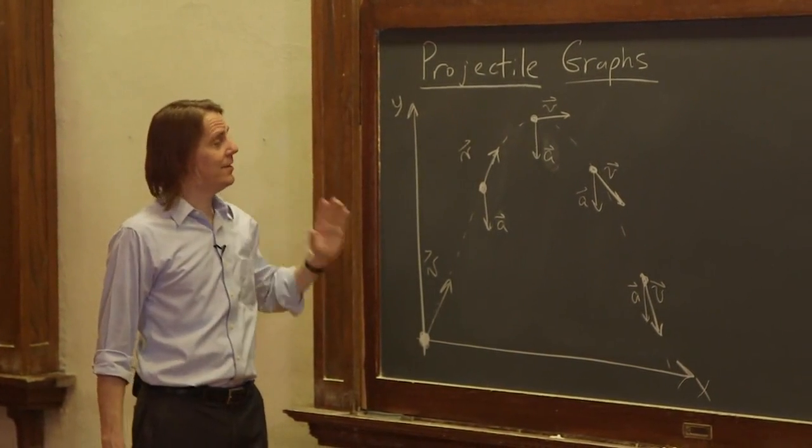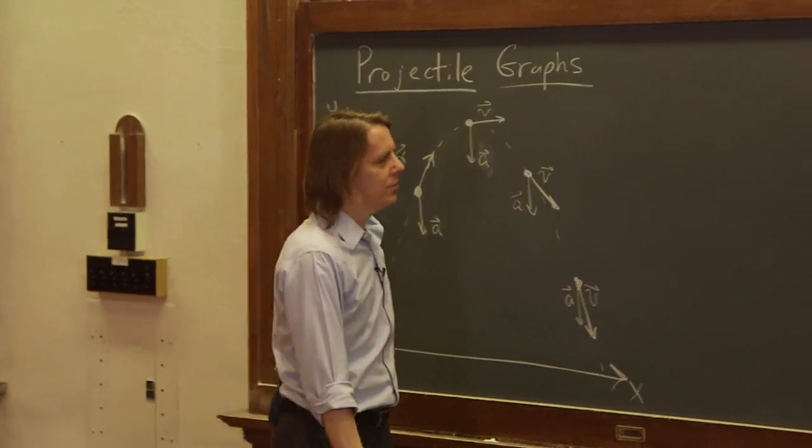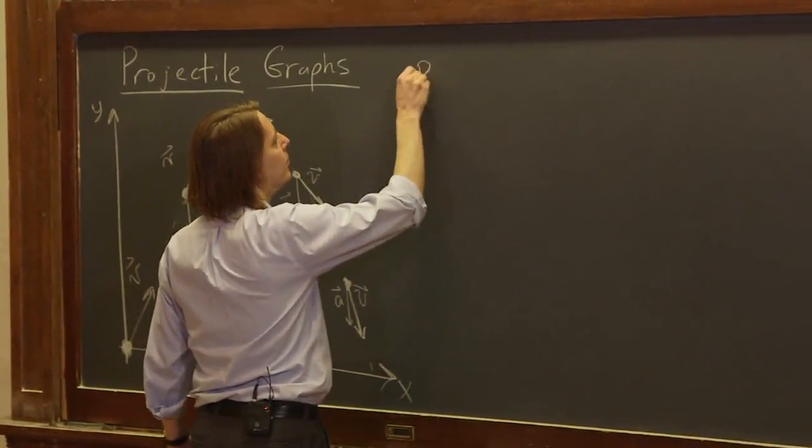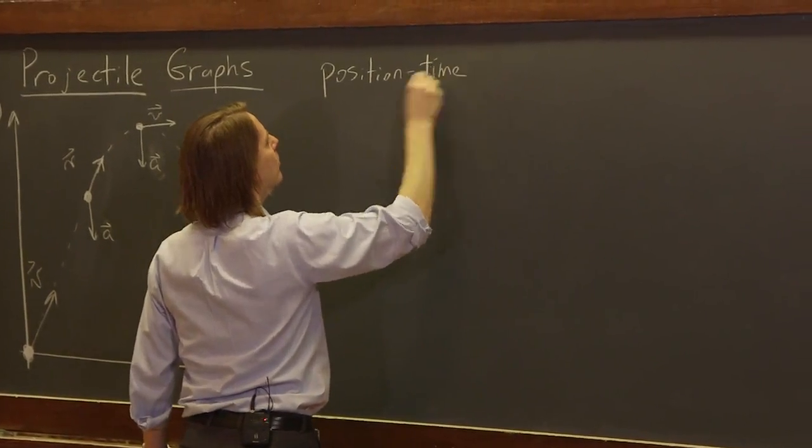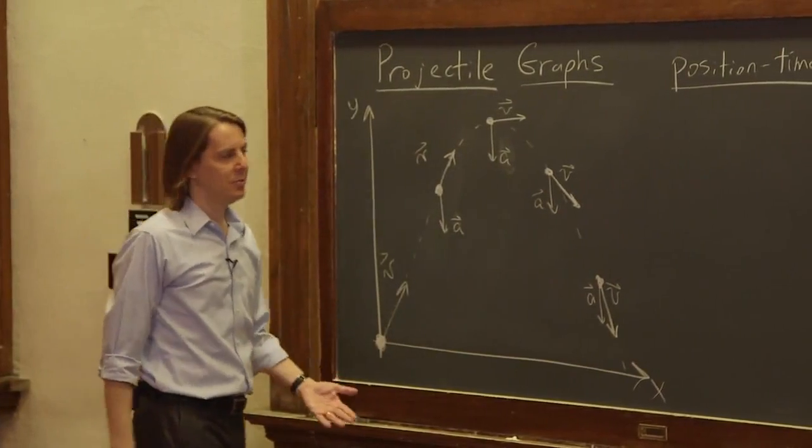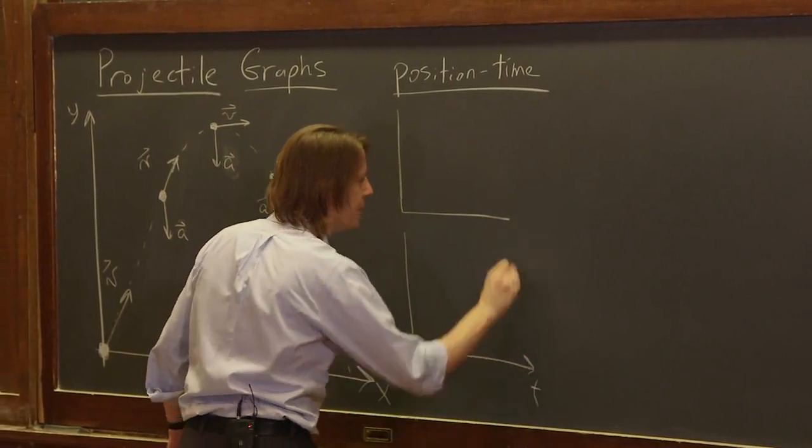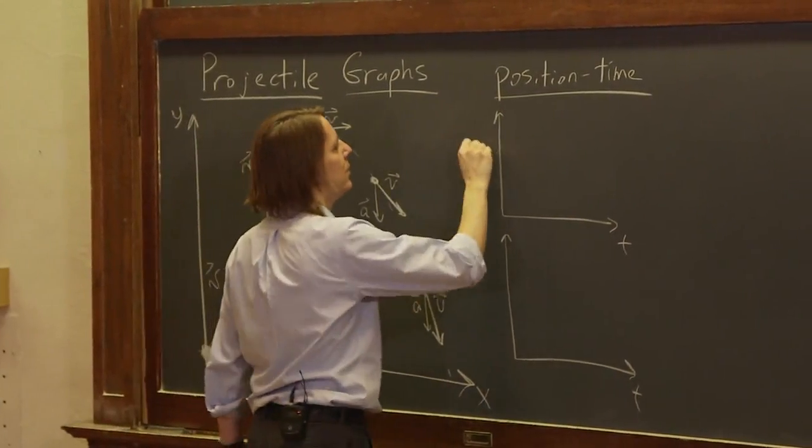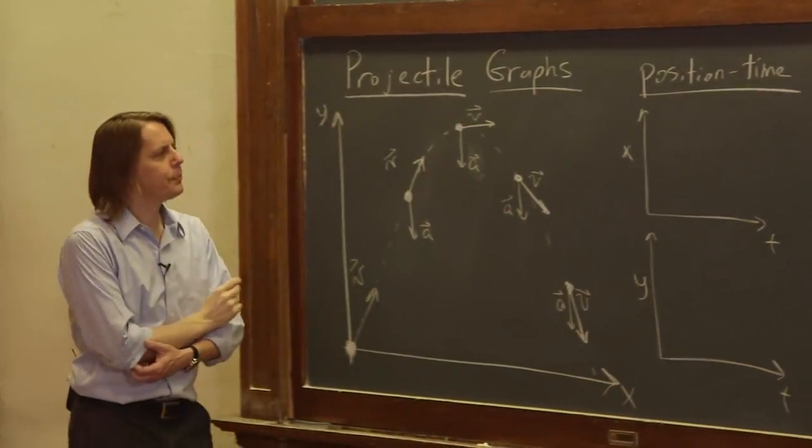So now let's see if we can translate this trajectory to the standard kinematics graphs. Let's look at position time. Well there's actually two. There's position time in the x and position time in the y. So let's do both of them together. Time and what do I want on top? Let's say x. x on top and y down below.